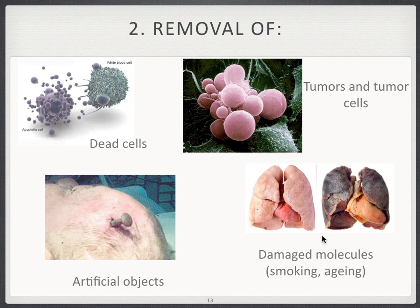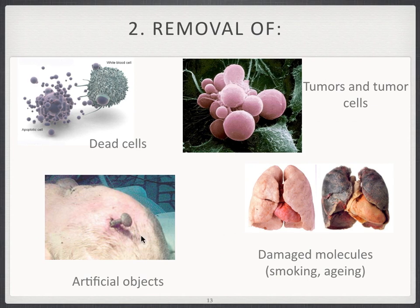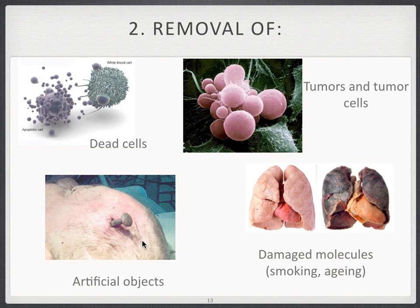Like when they develop as you age, or for instance when you smoke, you develop a lot of molecules that have been damaged or changed in a way that they're not functional anymore and need to be removed. But also artificial objects — like a nail in somebody's head — your immune system will try to remove this intruder. Also with splinters, your immune system will slowly try to get the splinter out of your tissue. So we'll discuss all these things in more detail in the upcoming online classes.